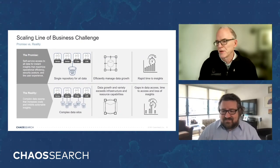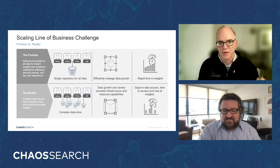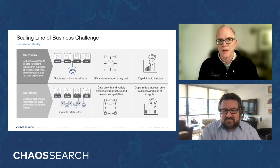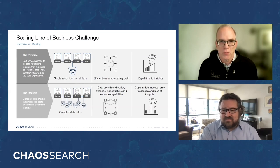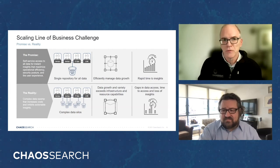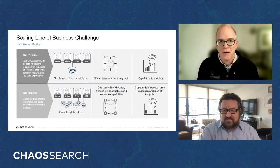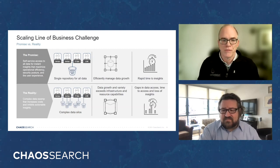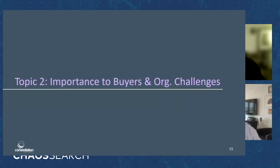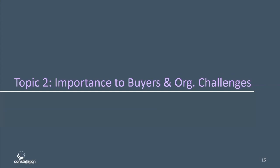I couldn't agree with you more on two points: agility is so important — that's really the driver behind the move to the cloud. And the second one is complexity. That's why we've seen a change in these platforms as we move into the cloud, and that embrace of cloud-native object storage as the underlying architecture underneath all of these platforms today. So next up, let's talk about the importance of these platforms and some of the challenges that organizations face as they contemplate how they embrace these challenges.